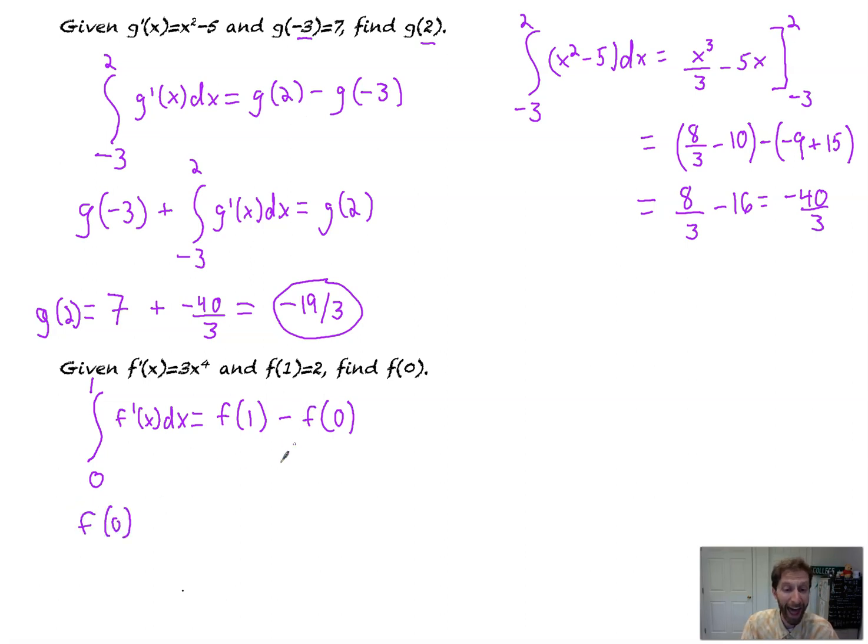Add f of 0 over to the other side. So that's what I'm going to do. I'll add f of 0, and I'll subtract this to the other side. And I'll tell you why that makes sense in a second.